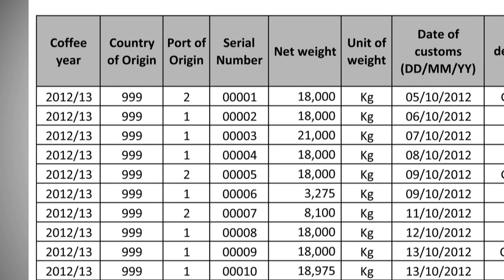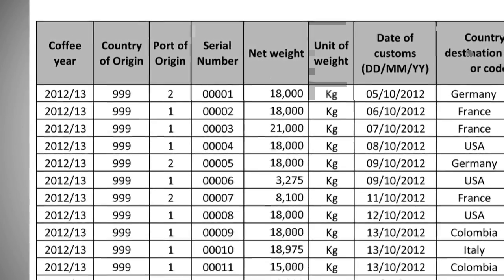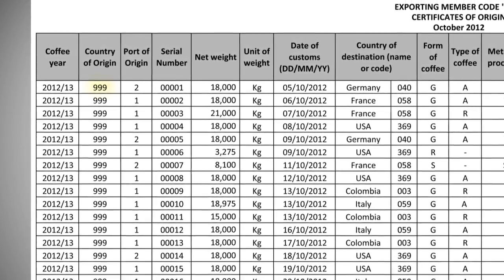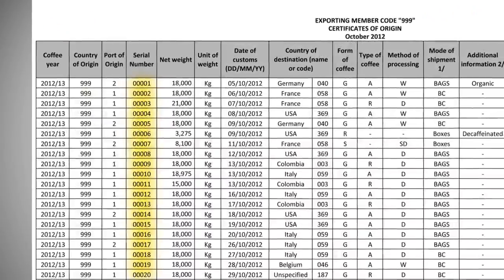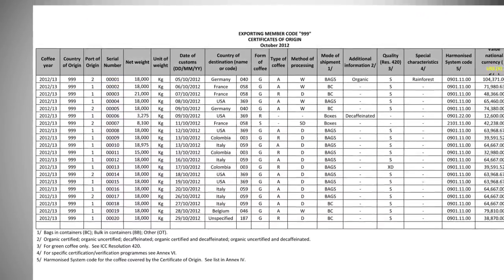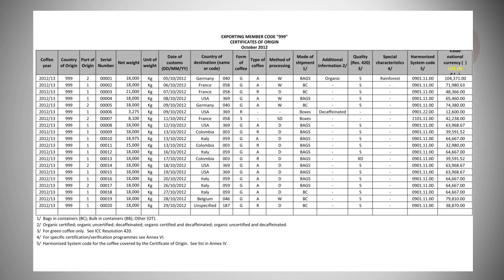Based on the example prepared for document ICC 1029, let's assume the exporting member identified by its ICO code as 999 has issued 20 Certificates of Origin to cover its exports in the month of October 2012, as shown here. The objective now is to prepare a statistical report for October 2012 based on those 20 Certificates of Origin issued.